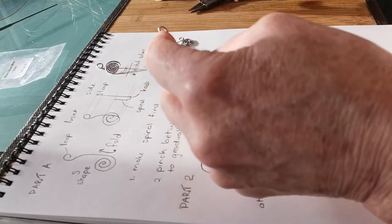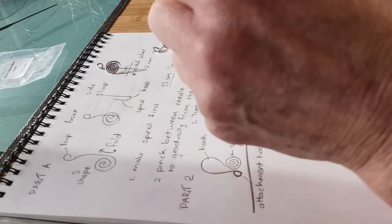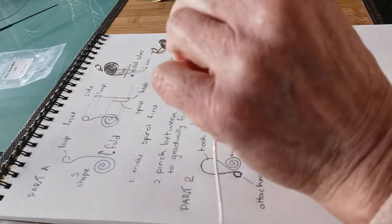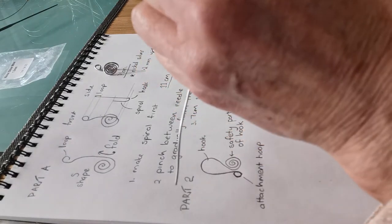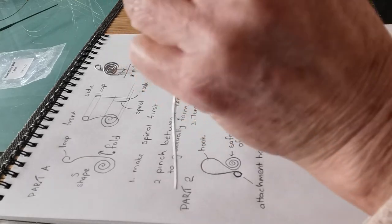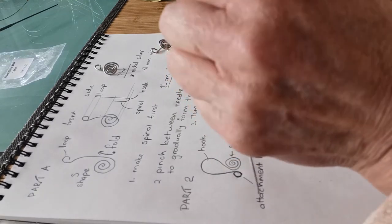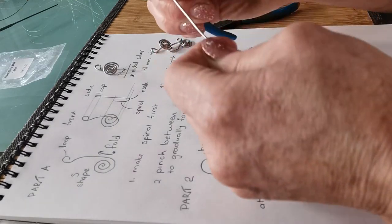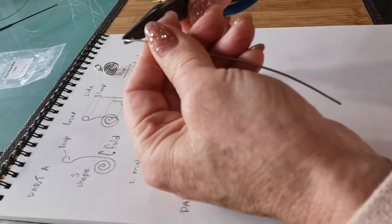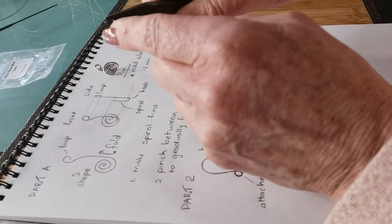When you start your first spiral, start by putting the round nose pliers inside that loop. Your first spiral needs to be done with the round nose pliers in the center until you get a little bit something for the other pliers to hold on to. Once you've got that, you can put it inside the needle nose pliers across.